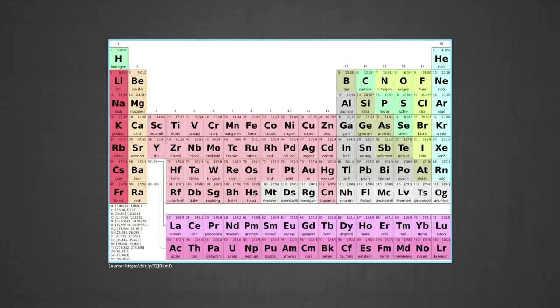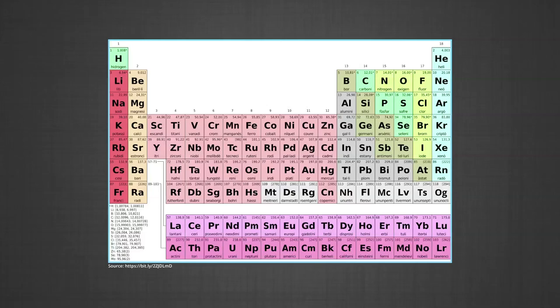In the figure shown below you can see all the series. The first formal member of group 3 of the 5D series, that is lanthanum, and the 6D series, that is actinium, have been discussed with the elements of the F block due to resemblance in properties. Most of the elements of the 6D series, that is transuranium, are short-lived and synthetic.